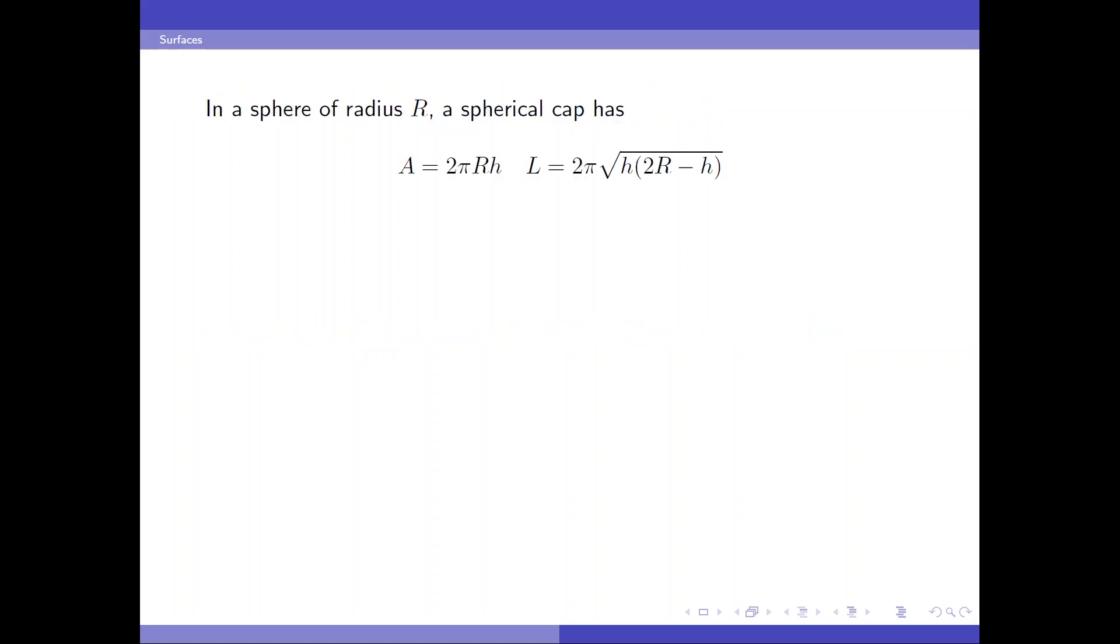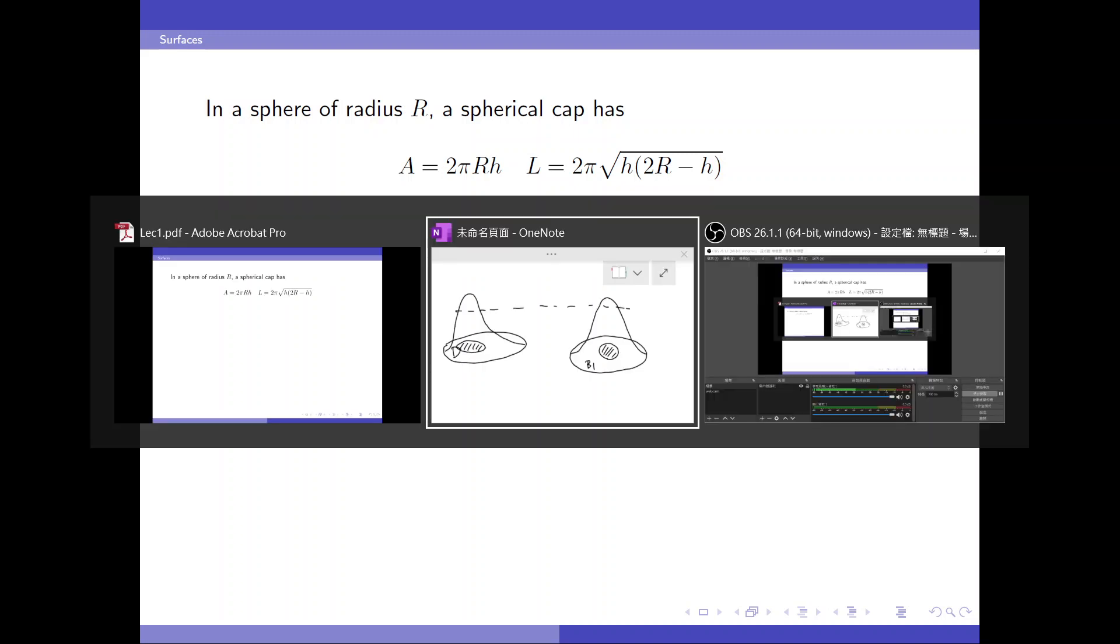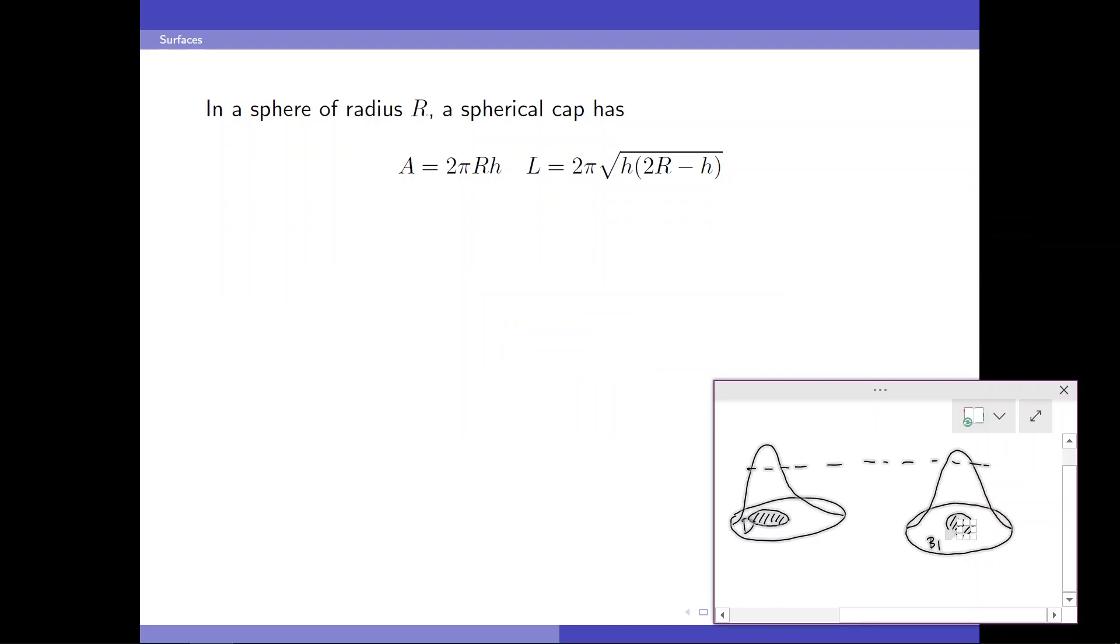Let's first guess what kind of isoperimetric inequality we should expect on a sphere. So we look at the spherical caps. A spherical cap in a sphere of radius r has area and length given by the following formula. Let's see how these are derived.